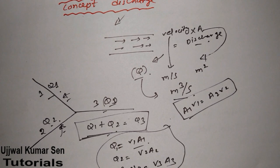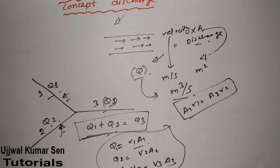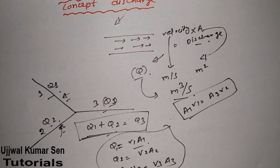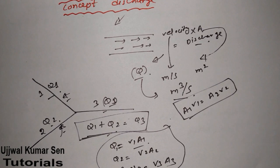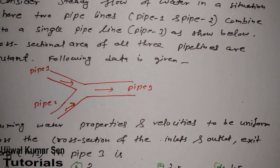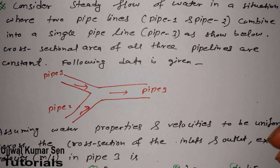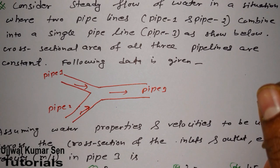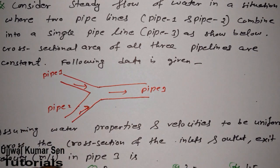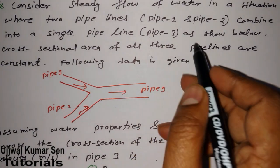Let's go through the numerical problem asked in GATE previous year so you can understand the concept much better. The question says: consider steady flow of water where two pipelines — pipe one and pipe two — combine into a single pipeline, pipe three, as shown in the diagram. The cross-sectional areas of the pipelines are constant.